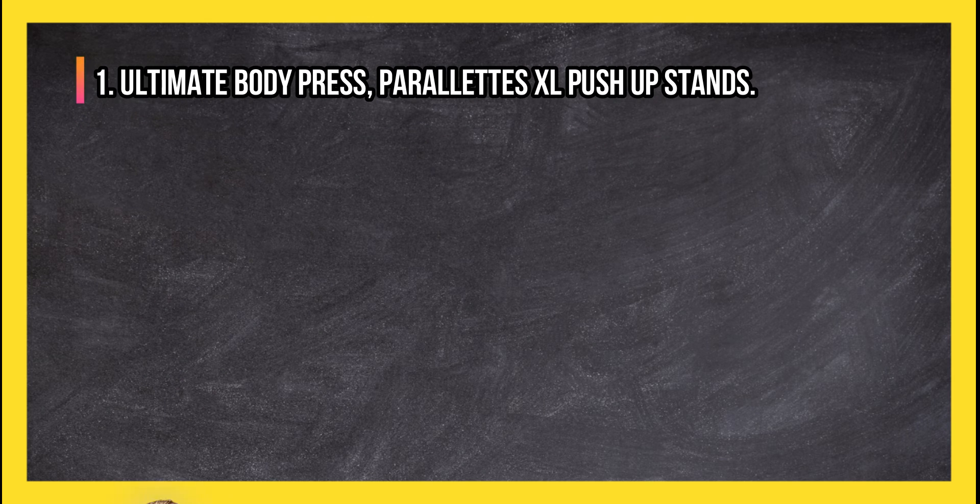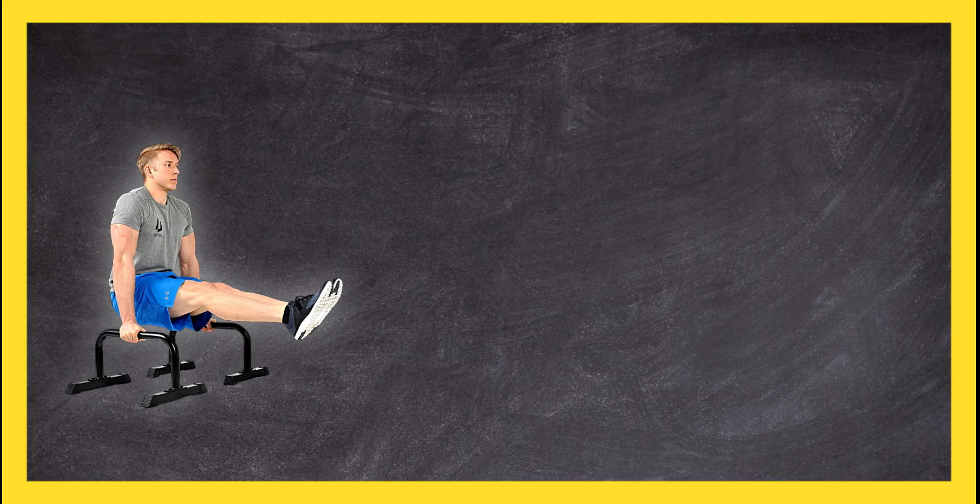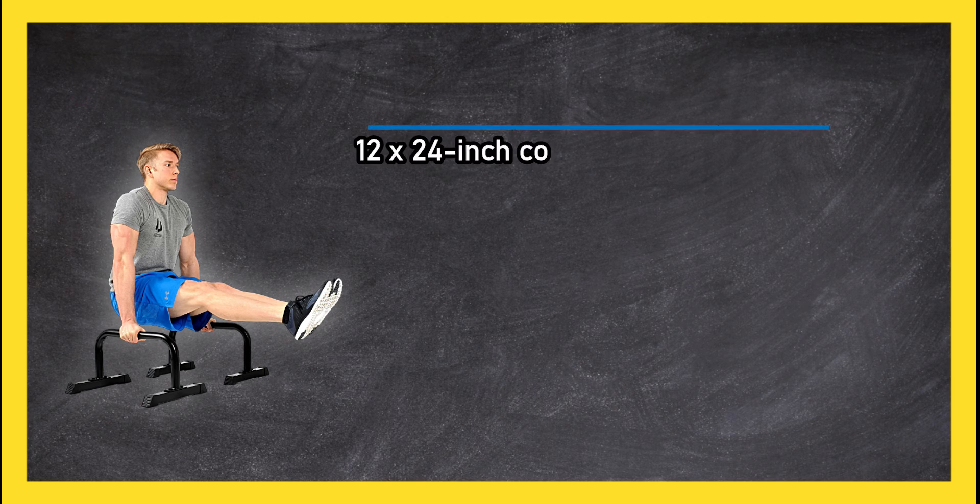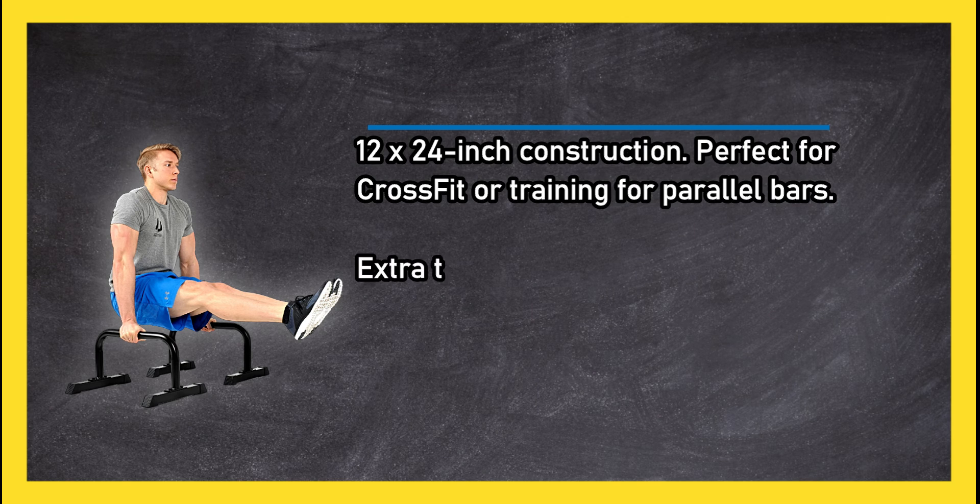Weighs at number one, ultimate body press parallettes excel push-up stands. 12 by 24 inch construction, perfect for crossfit or training for parallel bars.